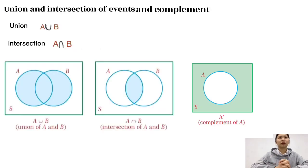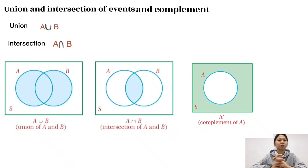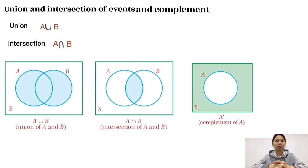Next, union and intersection of events. The union of two events A and B is the set of all outcomes which are in A or B. It is denoted by A ∪ B. The intersection of two events A and B is the set of all outcomes in both A and B. It is denoted by A ∩ B.